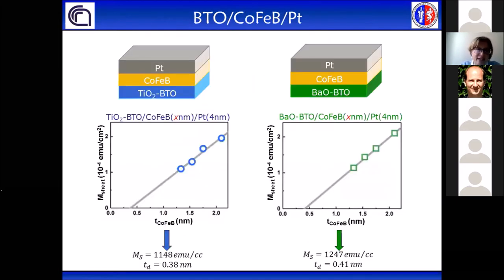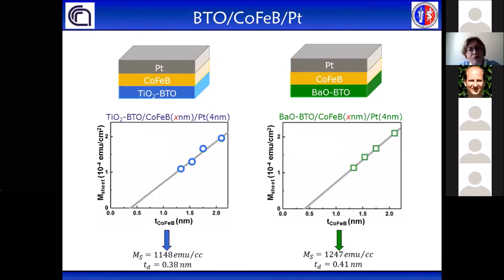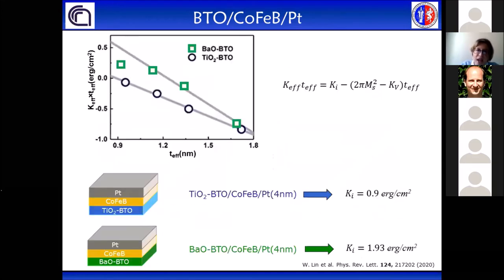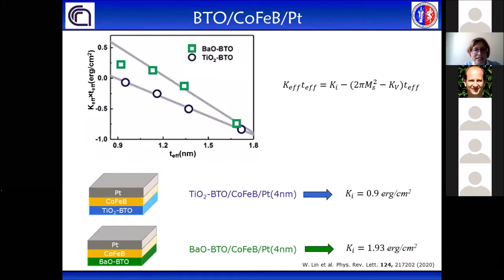To investigate the magnetic properties of the cobalt iron boron film, we prepared a set of samples with different thicknesses of the cobalt iron boron film deposited on BTO with different terminations. The magnetic moment per unit area as a function of the CoFeB film thickness shows that the magnetic dead layer is about 0.4 nanometers for both terminations, while the saturation magnetization is slightly higher for cobalt iron boron film deposited on BTO barium oxide terminated. From the product between the effective out-of-plane anisotropy constant and the effective thickness as a function of effective thickness, we found that the interfacial out-of-plane anisotropy is almost double for cobalt iron boron film deposited on BTO barium oxide terminated.